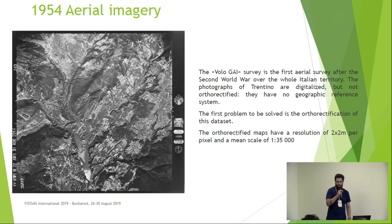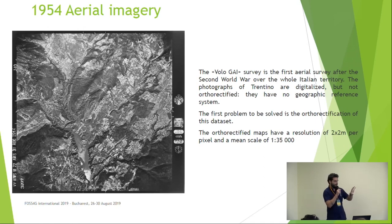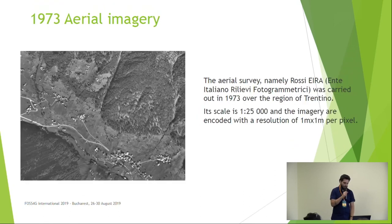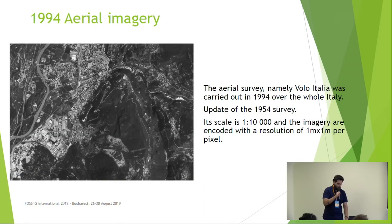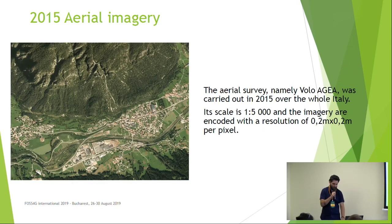Then we move to the 1950s when we have the first aerial images, taken just before the war. For Trentino we have to overcome the first problem with GRASS GIS, which is the orthorectification of this whole dataset, because these images were taken and just left to collect dust in some archive. We retrieved them and had to digitalize them first and then orthorectify them. Then we have the 1973 aerial images, the 1994 aerial imagery, and then we start with the series of colored aerial images: the 2006 and 2015 aerial imagery.